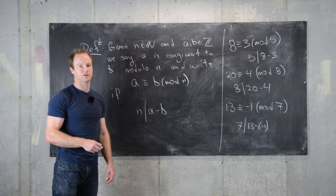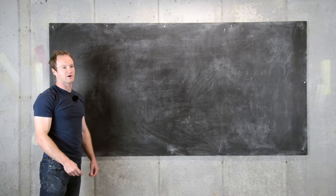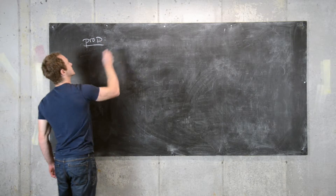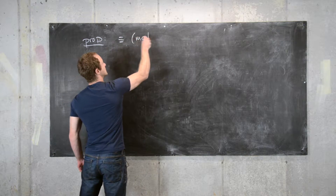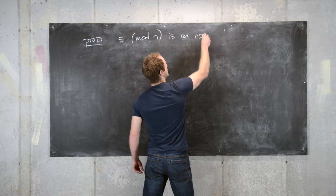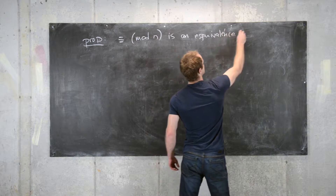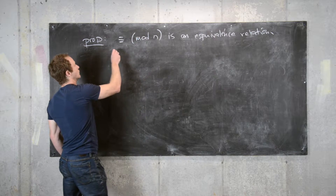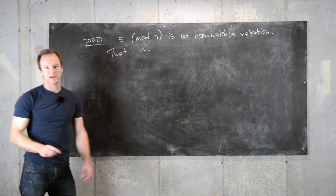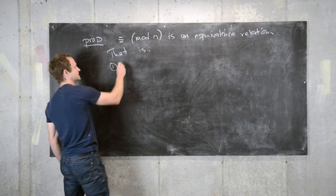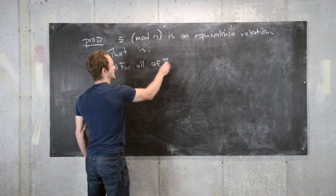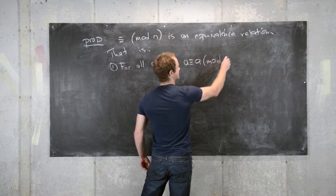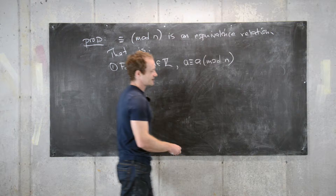Now let's look at some basic properties of congruence. The first property is that congruence modulo n is an equivalence relation. The first condition is reflexivity: for all integers a, a is congruent to a modulo n.